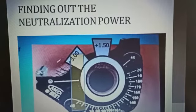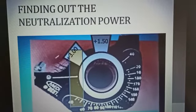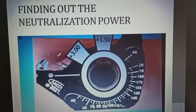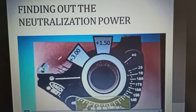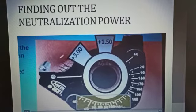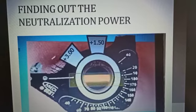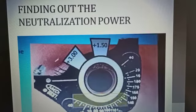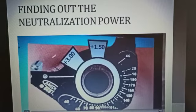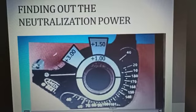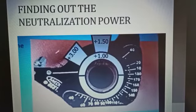Now what you have to do is rotate the rotating sleeve of the retinoscope to rotate the reflex to the horizontal meridian. Now you can see it has been rotated to the horizontal meridian. We have to check the reflex at 180 degrees. Here you can see the reflex is with movement. So now we have to add plus cylindrical lenses. We have used plus 1 cylindrical lenses.